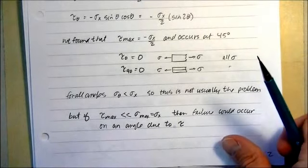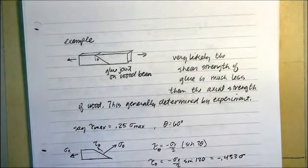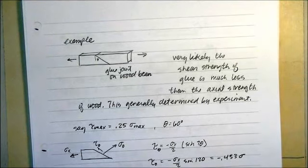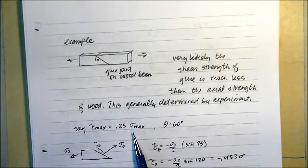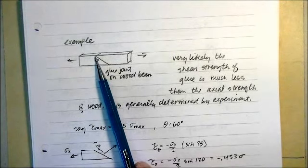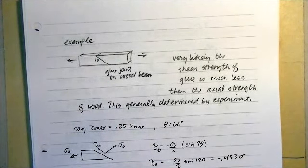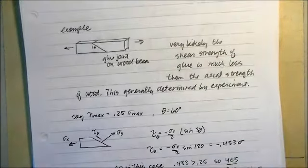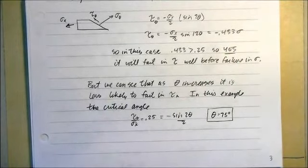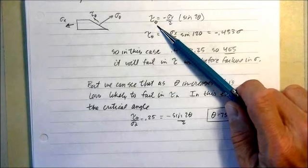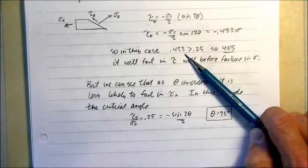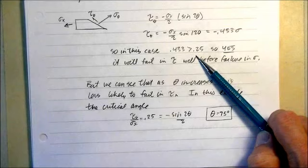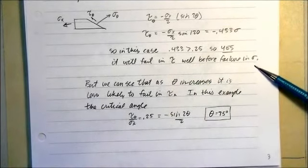That's what we discovered with glued joints and finger-joint lumber. Here's an example: a glue joint on a wood beam where by experiment the shear stress is only a quarter of the maximum normal stress. We're going to glue it at 60 degrees. Using our stress transformation equations, we find that tau-theta — the shear stress at 60 degrees — equals 0.433 of sigma-max. Since 0.433 is greater than 0.25, it will fail in shear before it fails in normal stress.